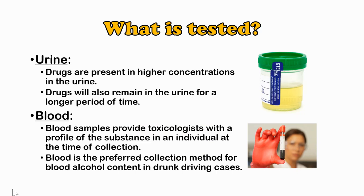What kinds of substances are tested? First, urine: drugs are present in higher concentrations in urine and will remain there for a longer period of time. This depends on the kind of drug. Simplified: a drug either dissolves in water or in fat. If it's water-soluble, it clears from your system much faster. If it's fat-soluble, your body takes longer to metabolize and clear it, so it remains in urine longer. Urine is a good place to detect toxins.